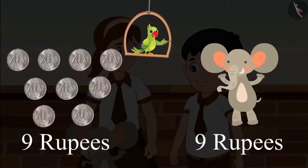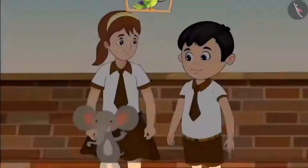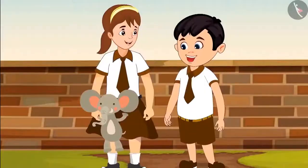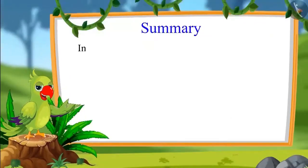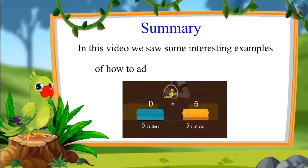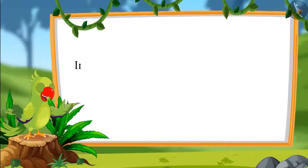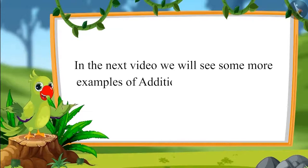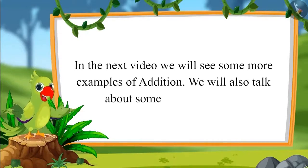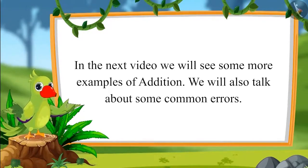Chotu and Aarti together have nine rupees, and the elephant also costs nine rupees. So yes — they bought the stuffed toy! That is all for today. In this video we saw interesting examples of how to add single-digit numbers. In the next video we will bring more exciting examples of addition and talk about common errors to avoid. Bye-bye children!